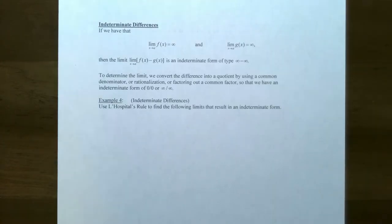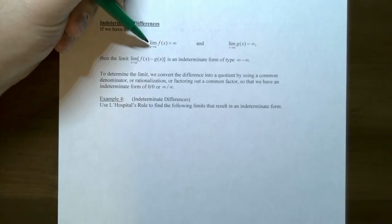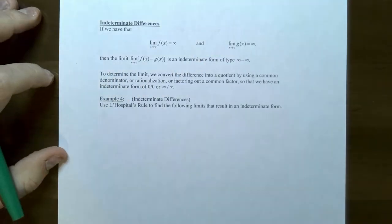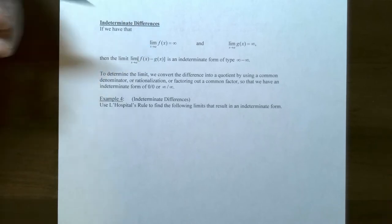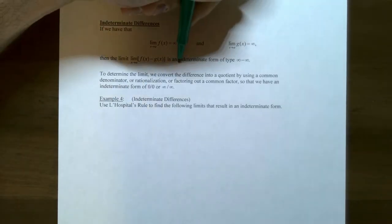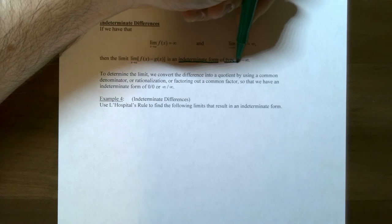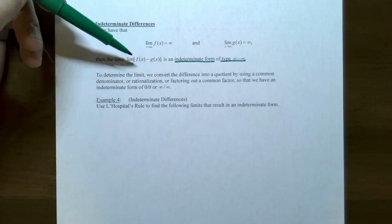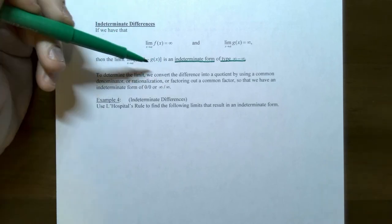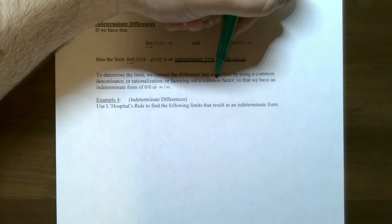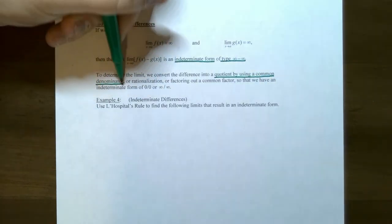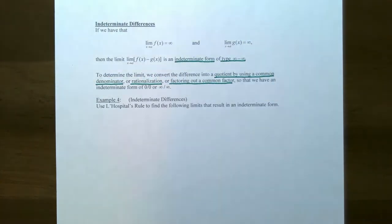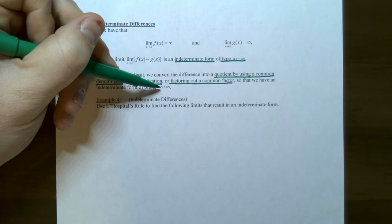Now we're going to look at indeterminate differences. Suppose the limit of f(x) as x approaches a is infinity, and the limit of g(x) as x approaches a is also infinity. When we want the limit of their difference f(x) minus g(x), this gives an indeterminate form of type infinity minus infinity. To handle this, we need to convert the difference into a quotient by using a common denominator, rationalization if there's a radical, or factoring out a common factor, to produce a 0 divided by 0 or infinity divided by infinity form.